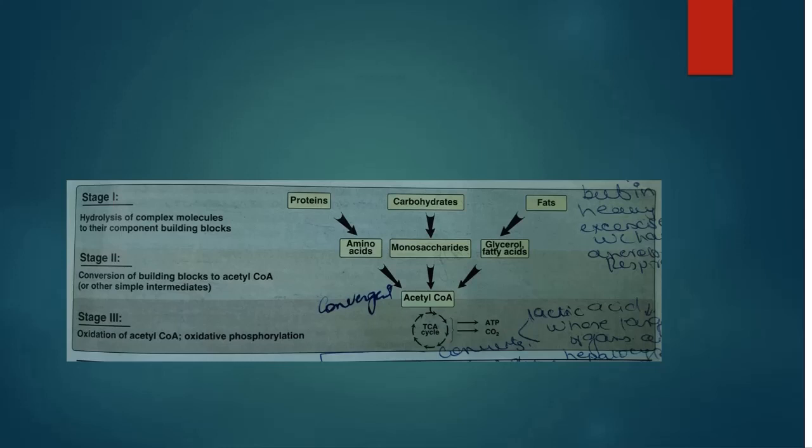Acetyl-CoA is now available and proceeds to the third stage — complete oxidation. That is the oxidation of acetyl-CoA via the TCA cycle and oxidative phosphorylation, resulting in the formation of ATPs and carbon dioxide. These three stages are very important to understand metabolism.